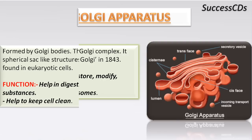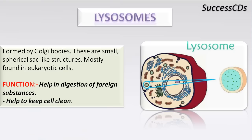Lysosomes are formed by Golgi bodies. These are very small, spherical, sac-like structures mostly found in eukaryotic cells. Lysosomes are the digestive system of the cell — they contain digestive enzymes that help break down foreign substances that have entered the cell. If the cell is damaged or ruptured, the lysosomes burst and the digestive enzymes destroy their own cell, essentially eating it. Their main function is digestion of foreign substances, keeping the cell clean, and they are sometimes called the suicidal bags of the cell.